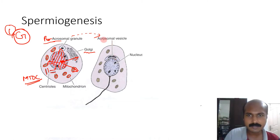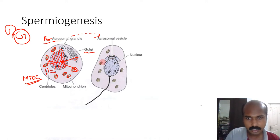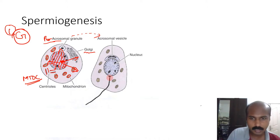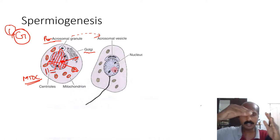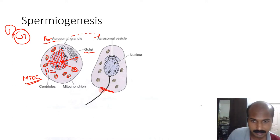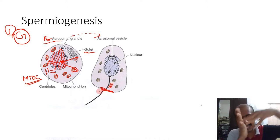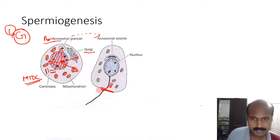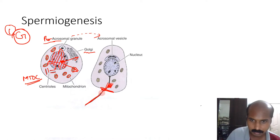As the acrosomal vesicle forms, it defines the anterior pole of the cell, establishing polarity. Opposite the acrosomal assembly, the centrioles assemble — both perpendicular to each other — and one centriole arranges perpendicular to the plasma membrane to form the axonemal complex.